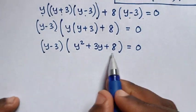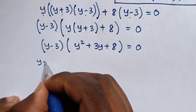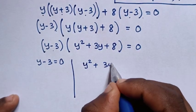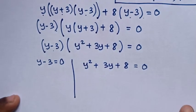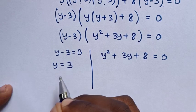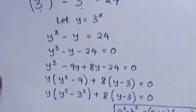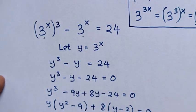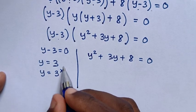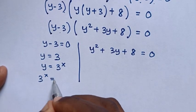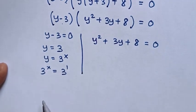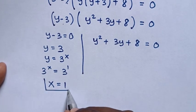Then in the next step, from this equation we have two solutions: first solution is y minus 3 is equal to 0, and the second solution is y squared plus 3y plus 8 is equal to 0. From the first solution, we take negative 3 to the right side, so it would be y is equal to 3. Now from the value of y, we let y is equal to 3 power of x. So from y is equal to 3 power of x, we compare: 3 power of x is equal to 3, which is the same as 3 power of 1. Because we have the same base, we compare the powers, so x is equal to 1.